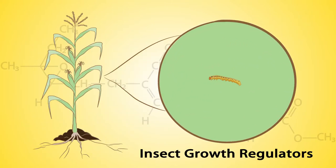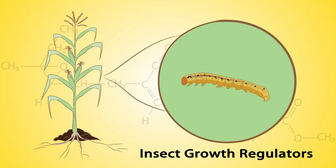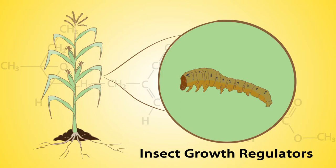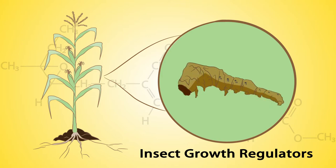Insect growth regulators inhibit the normal life cycle of insects by copying one of these hormones, directly interrupting cuticle development, or disrupting fat building. These would make insects die from staying in the immature life stage indefinitely.